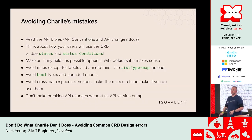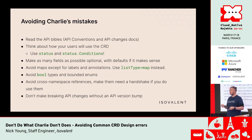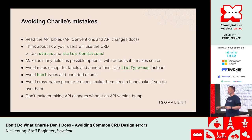Recap: Read the API Bibles. Think about how your users use the CRD. Use status and status conditions. Make as many fields as possible optional with defaults where possible. Avoid maps except for labels and annotations — use list type map instead. Avoid bool types and bounded enums. Avoid cross-namespace references; make them a handshake if you do use them. KEP 3766 should help with that soon. Don't make breaking API changes without an API version bump — which is such a big deal that it basically means: don't make breaking API changes.